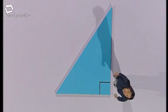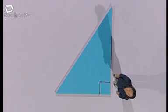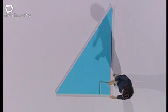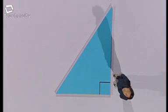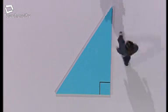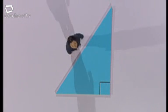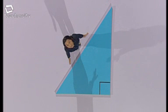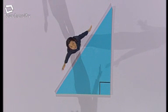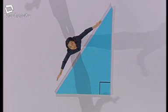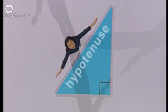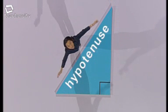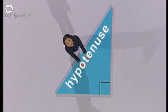This is a right-angled triangle, and it's called that because this angle here is exactly 90 degrees. Another feature of a right-angled triangle is that one side is always longer than the other two. This longest side is known as the hypotenuse, and it's easy to spot because it's always opposite the 90-degree angle.